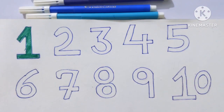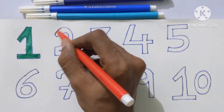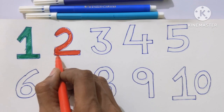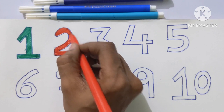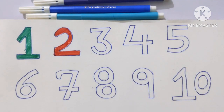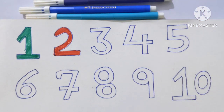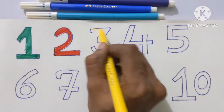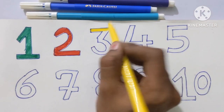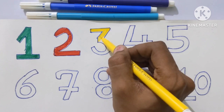Next, number 2. Number 2 is in red color. Next is number 3. Coloring the number 3 with a yellow color.